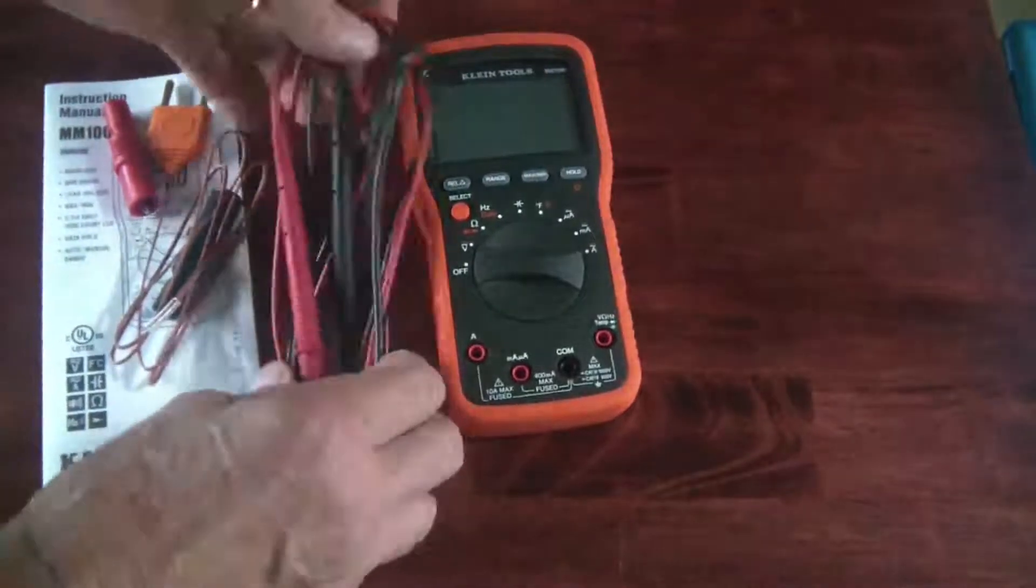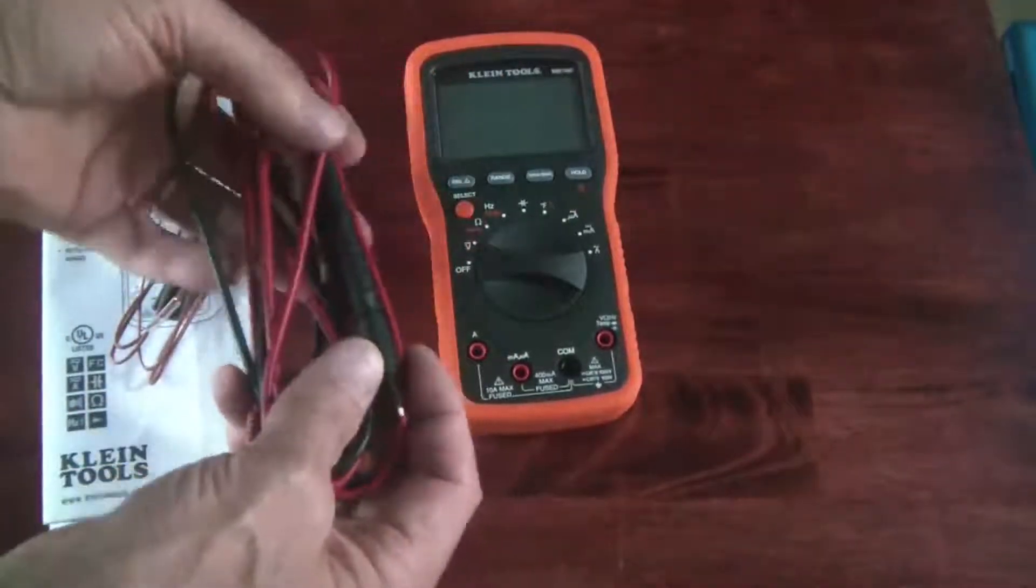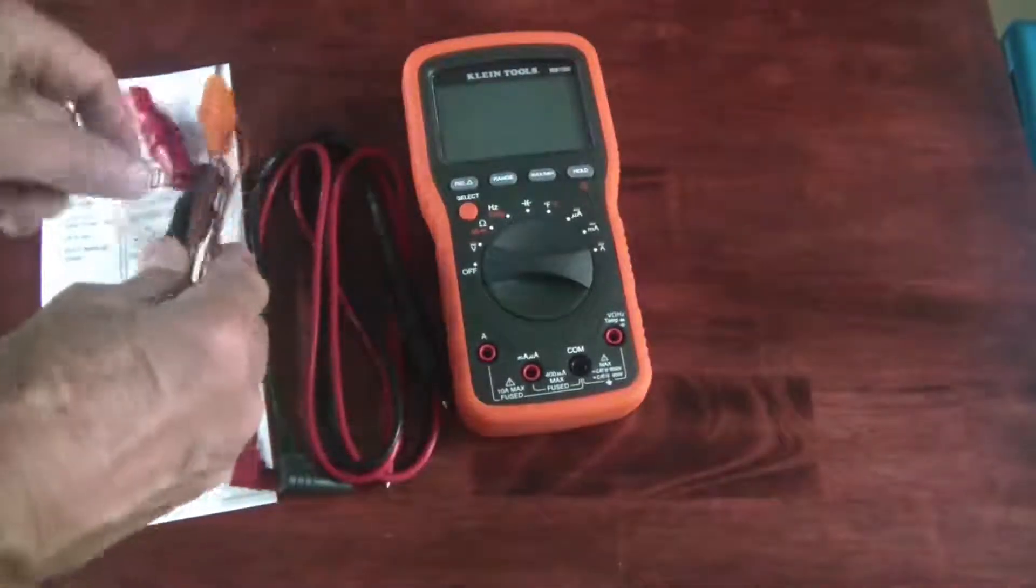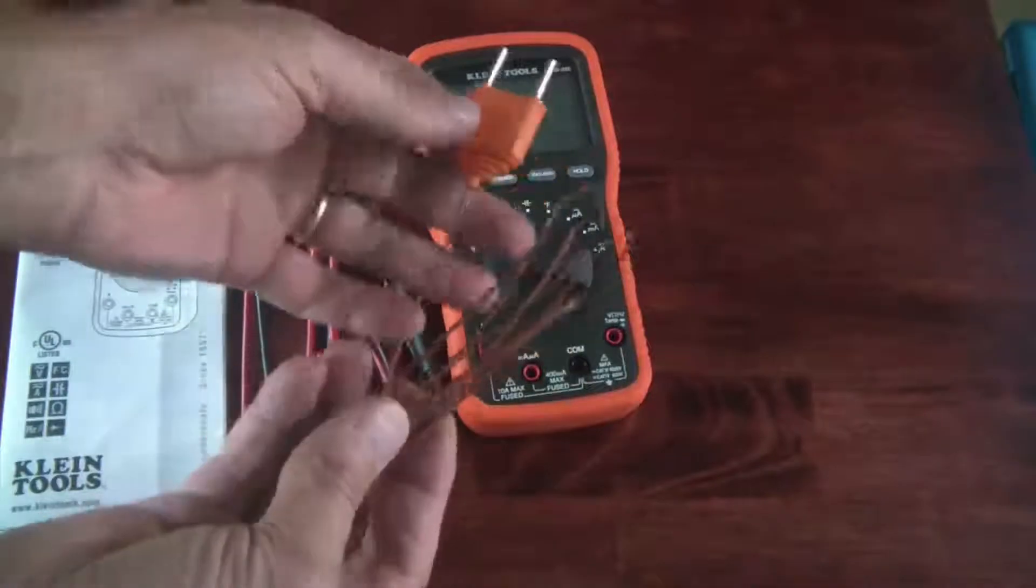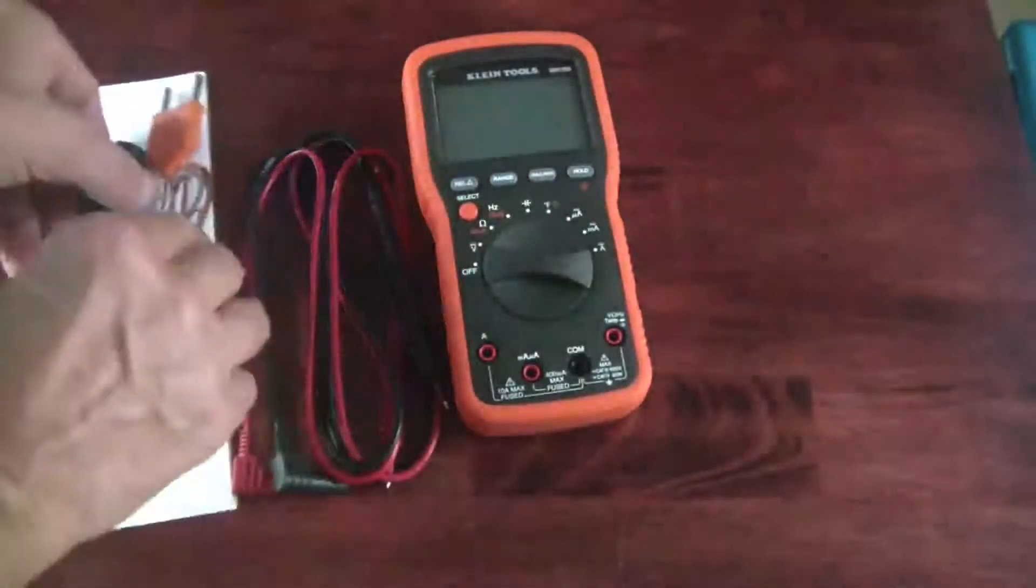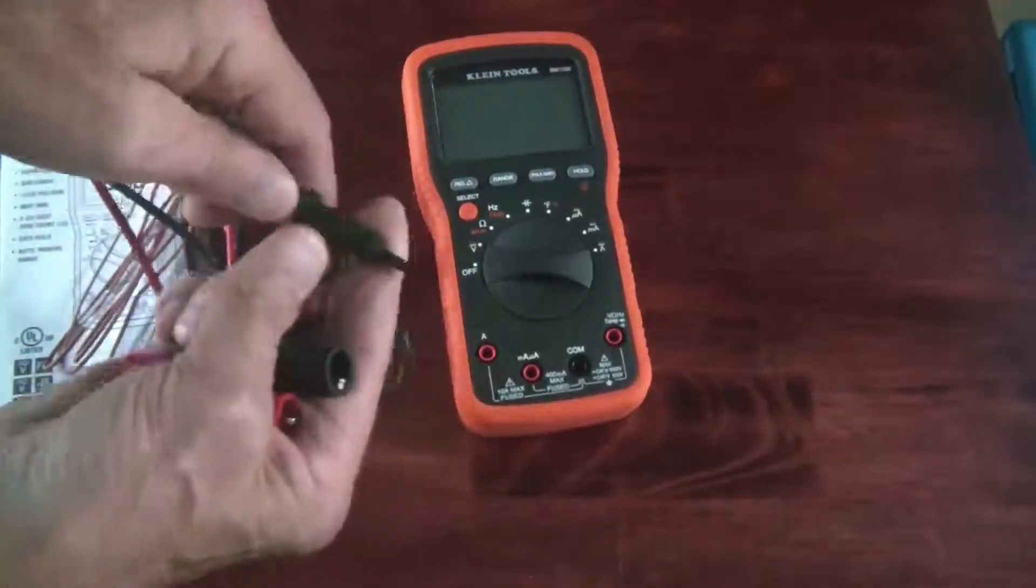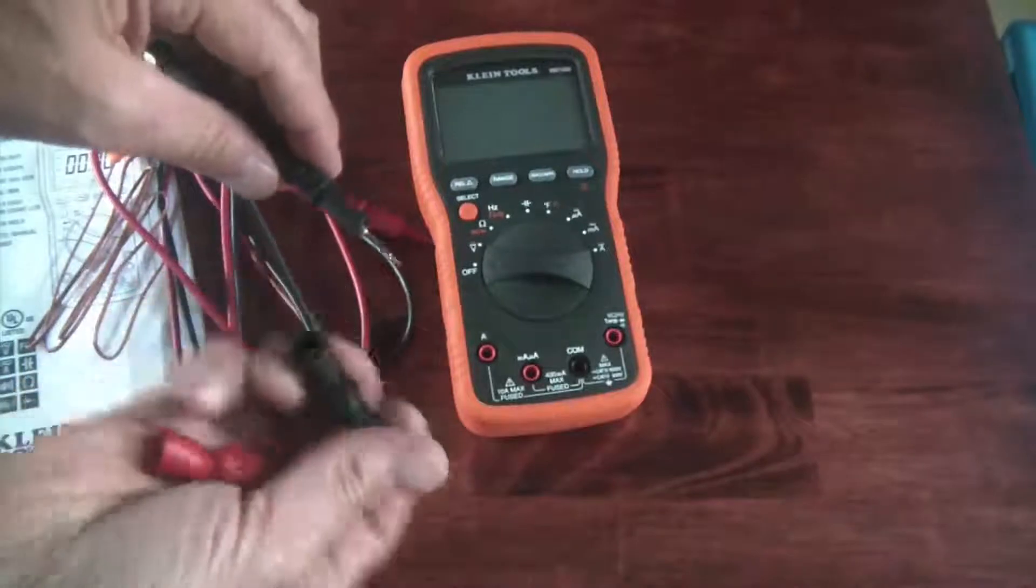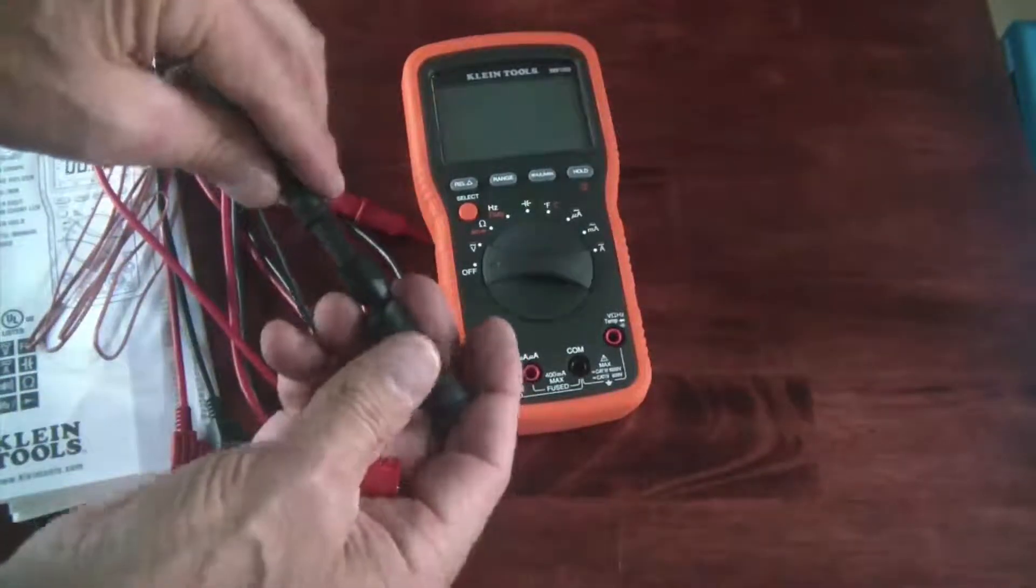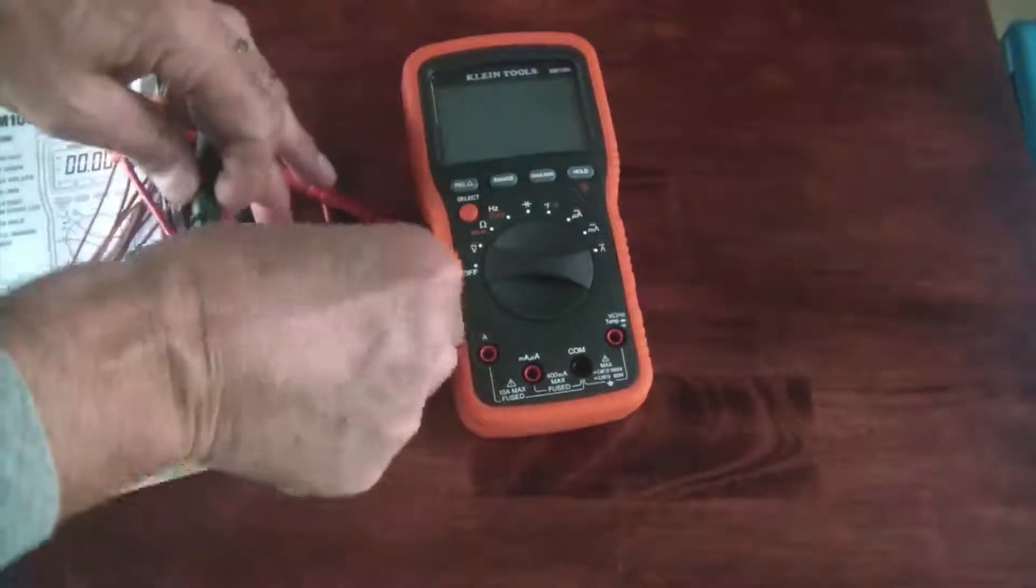You also get the test leads. Now these are 36 inches in length. There's a thermocouple that's included and again that cable length is 36 inches. And then there are some alligator clips and the way those go on is there's a little cover on the test leads and then these simply screw onto the test lead there. So that's how those work.